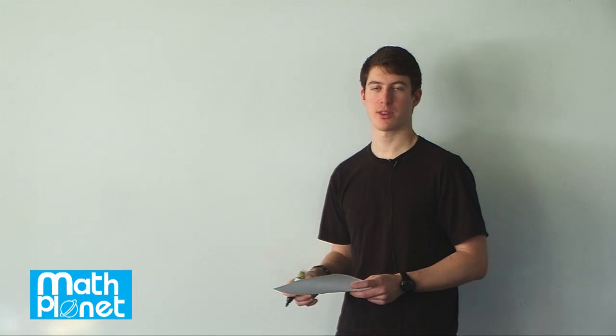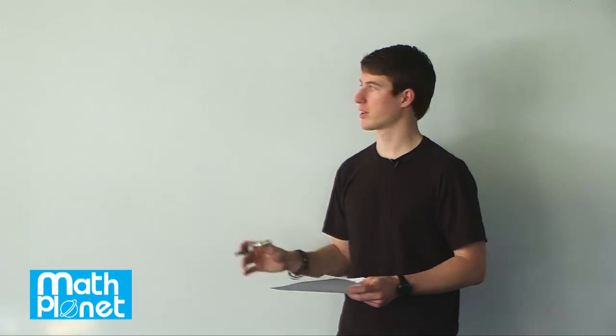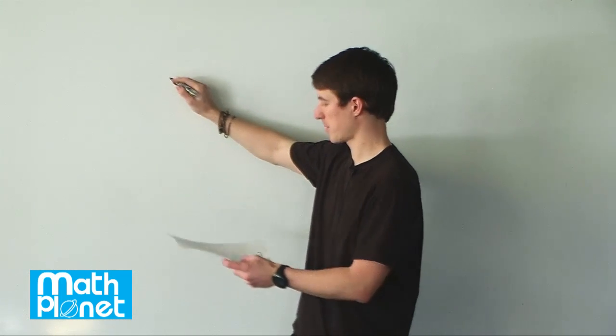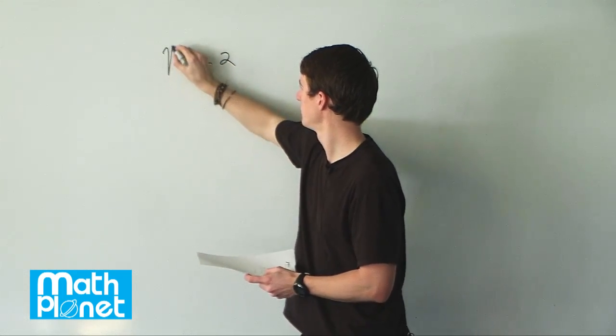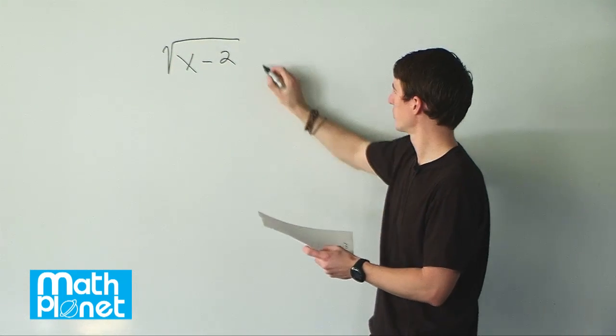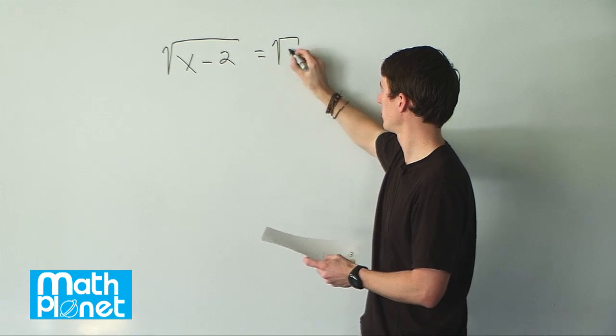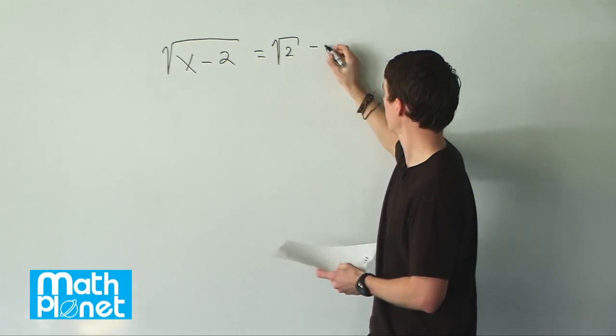Here we have an algebraic equation that we want to solve for x. Everything is normal except we have some square roots, so it might be a little bit more arithmetic and algebra. The equation reads: the square root of x minus 2 is equal to the square root of 2 minus square root of x.